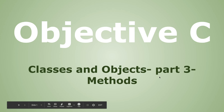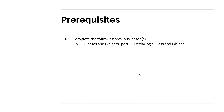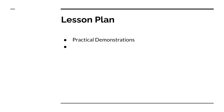Hi everyone. The lesson is Class and Objects Part 3 - Methods in Objective-C. We are using Xcode version 11.6 and Apple Developer Docs and API for referencing. You need to look at the previous lesson in this series, Class and Objects Part 2, declaring a class and object before this lesson. You will be learning about declaring methods and calling methods, and as usual it's practical demonstrations.